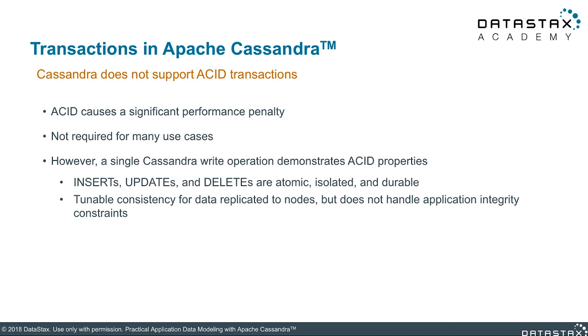Cassandra also supports a concept called tunable consistency, which allows the client to specify the required level of agreement between nodes for your reads and writes. Cassandra also provides mechanisms like batches and lightweight transactions that you can use to provide stronger guarantees of consistency in some cases.